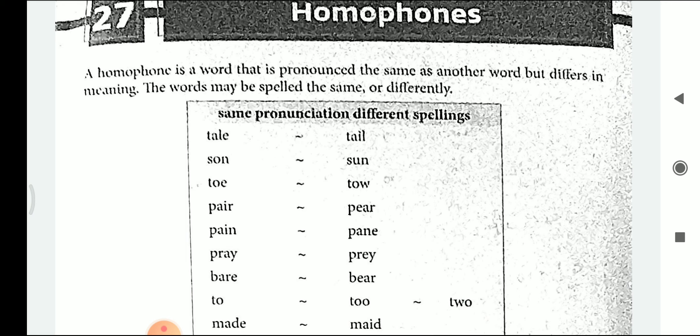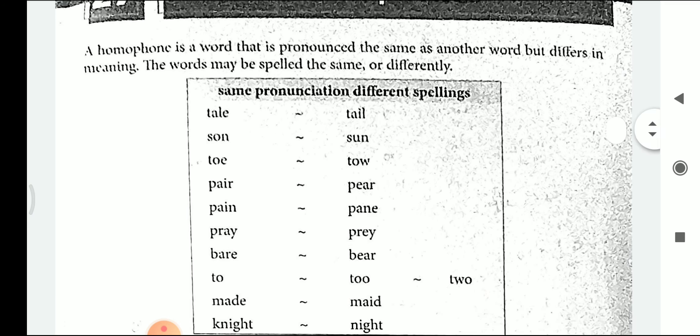The first one is T-A-L-E, 'tale', and the similar word is T-A-I-L, 'tail'. Here, T-A-L-E means a short story, and T-A-I-L means the part of an animal's body. S-O-N, 'son', and S-U-N, 'sun' — 'son' represents the male child of parents, and 'sun' represents the part of the solar body.